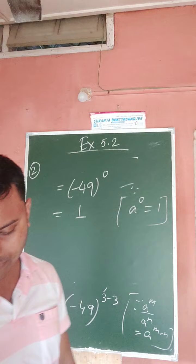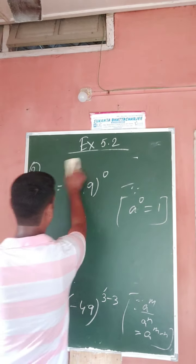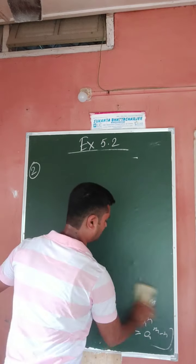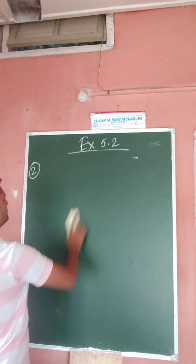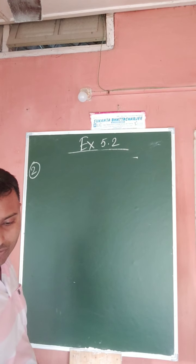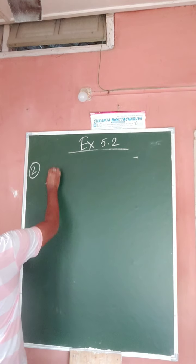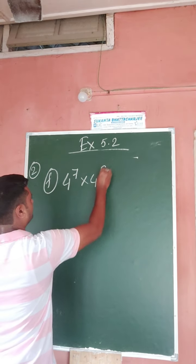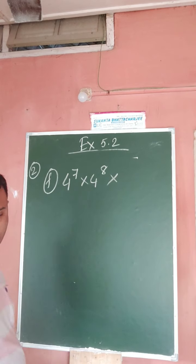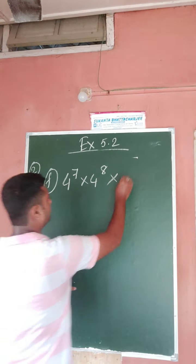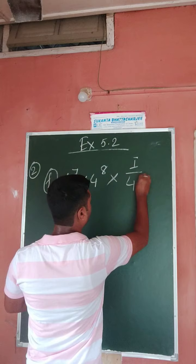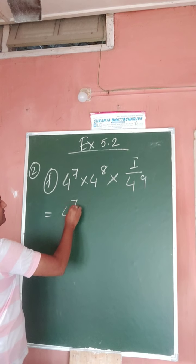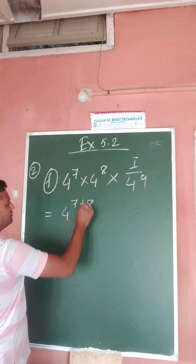Now come to question number f. The formula is a to the power m into a to the power n. Question number f is: 4 to the power 7 into 4 to the power 8 into 1 by 4 to the power 9. Applying the formula a to the power m into a to the power n equals a to the power m plus n.